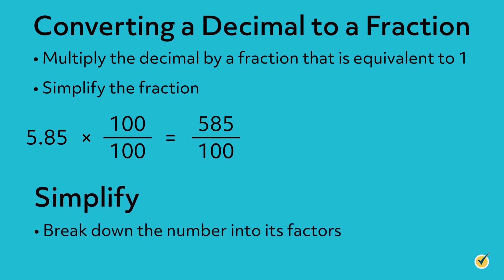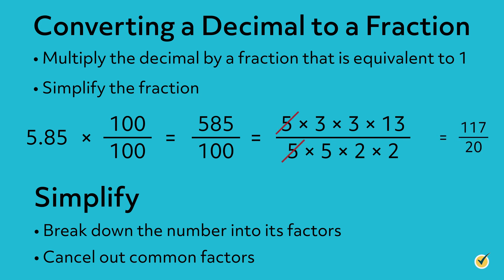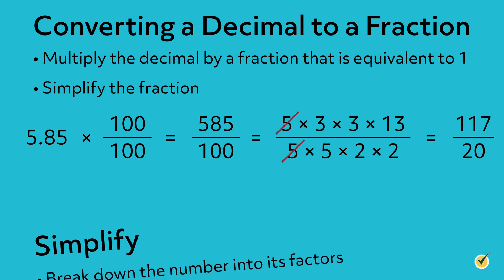we will start by breaking down the number into its factors. Then we will cancel out the common factors in the numerator and denominator. Both numbers have a factor of 5, so 585 over 100 can be simplified to 117 over 20. The fraction equivalent to 5.85 is 117 over 20,